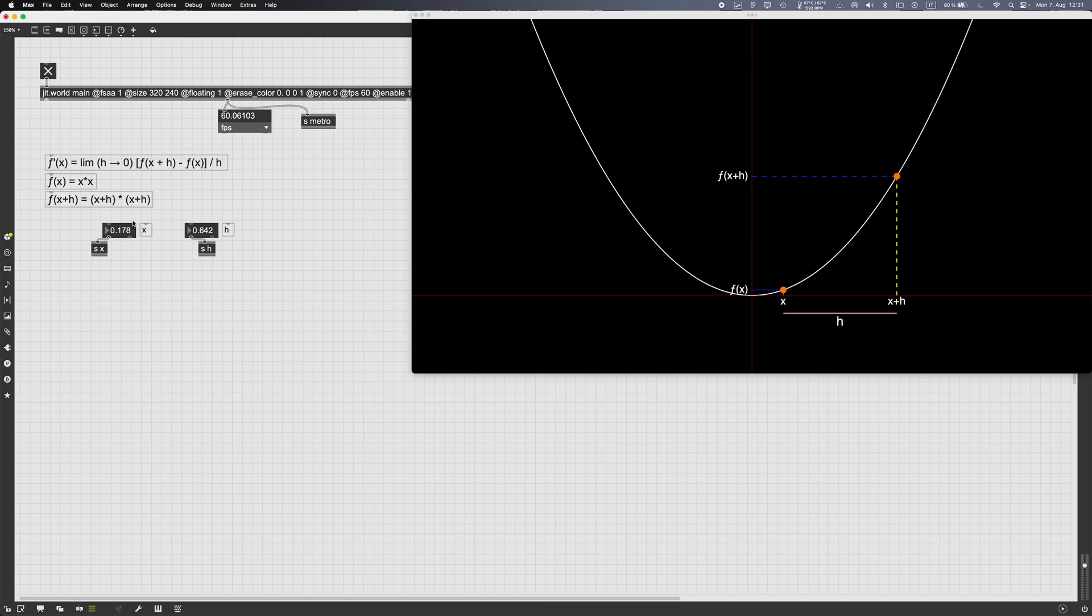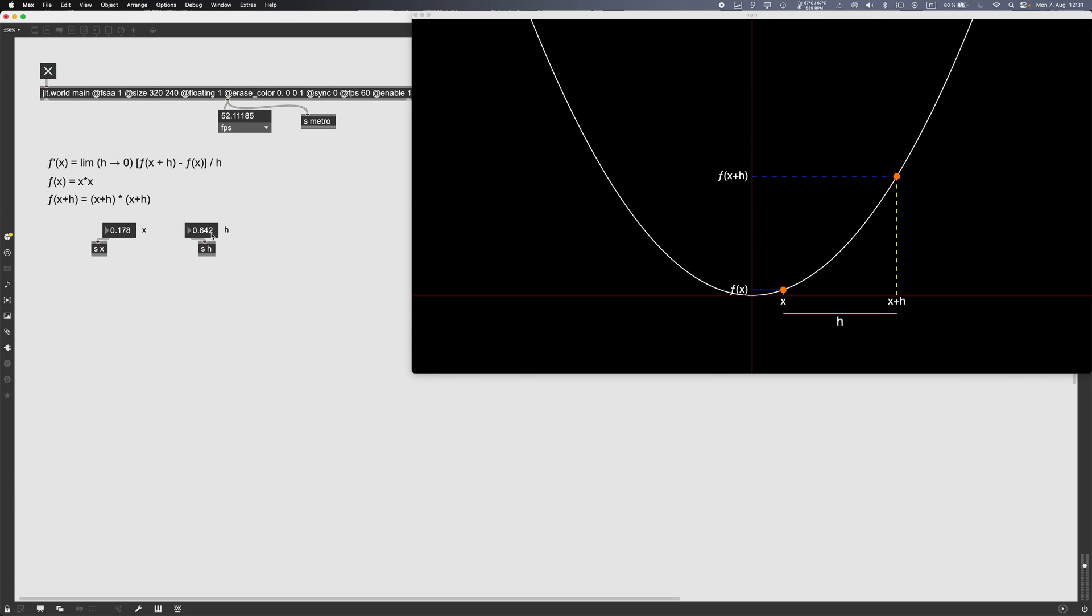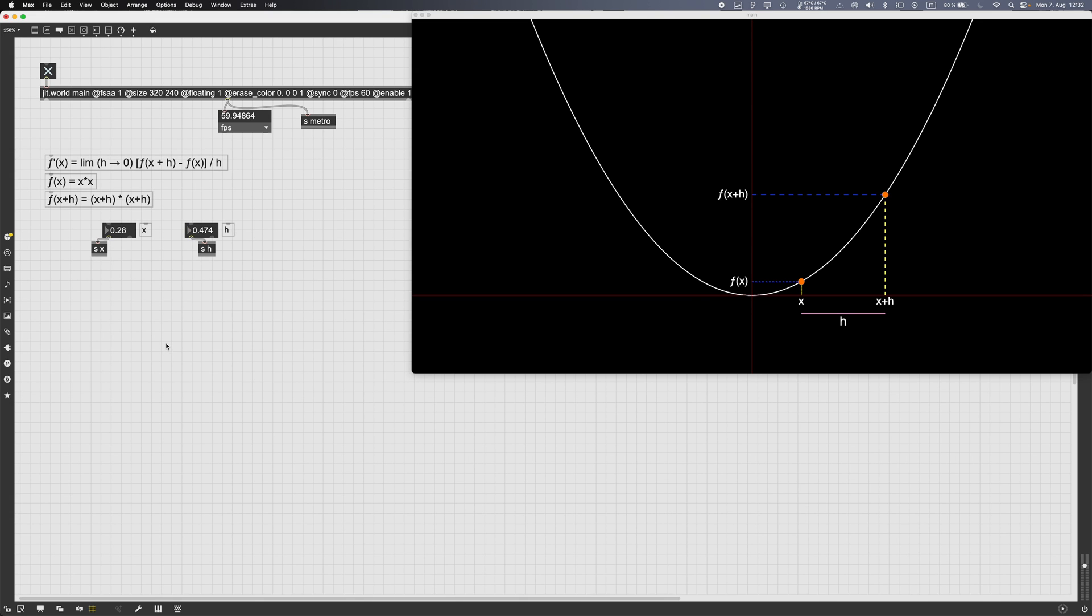Let's now see how we can calculate and visualize a derivative in max MSP. So we got our point here on the x-axis and our distance h. The function we are using is the one for the parabola, so f of x is equal to x squared, and f of x plus h will be equal to x plus h squared. So let's now proceed to calculate the slope of the tangent, which is to say the derivative of that function.